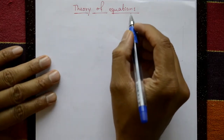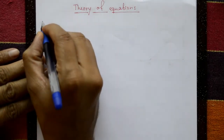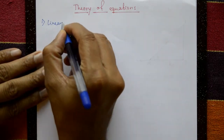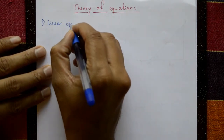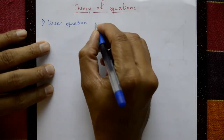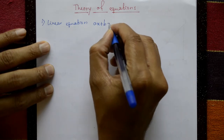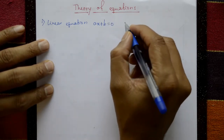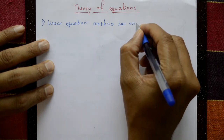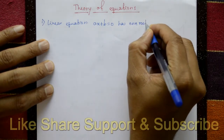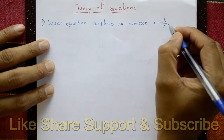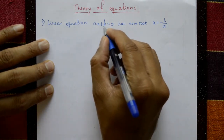Theory of equations. First one: linear equation. A linear equation is ax plus b equals 0, and it has one root. That root is x equals minus b by a.